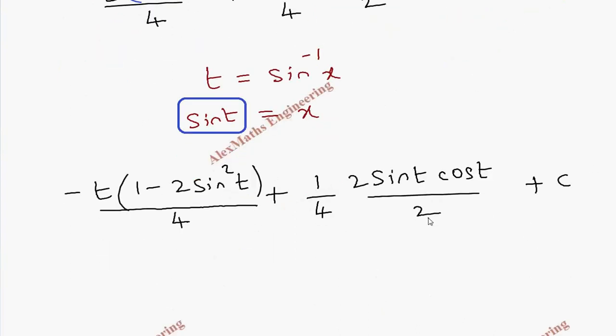Plus c. But still I did not get sine t everywhere. Even this has to be written in terms of sine t. So once again, this will become minus t into 1 minus 2 sine square t by 4.